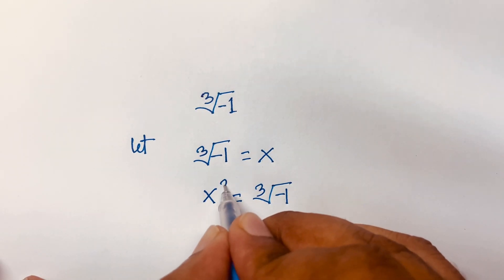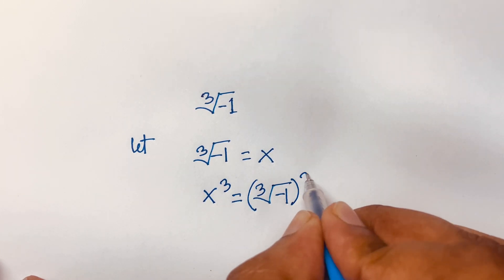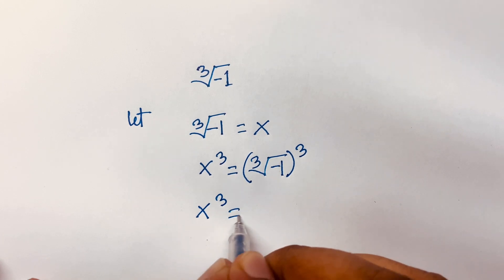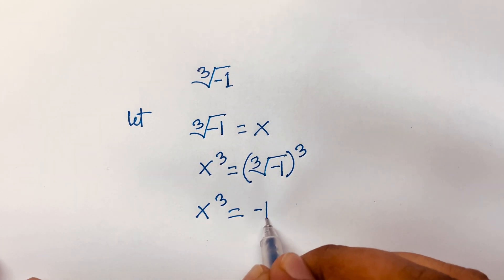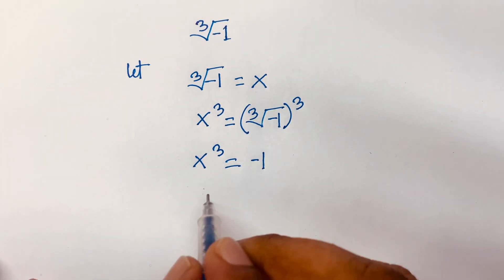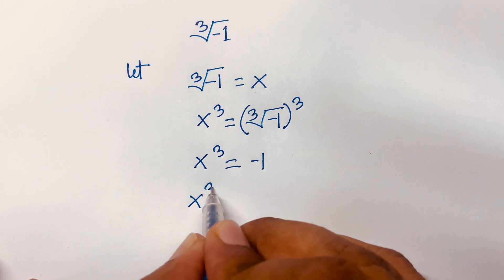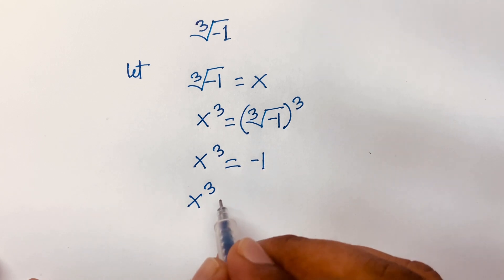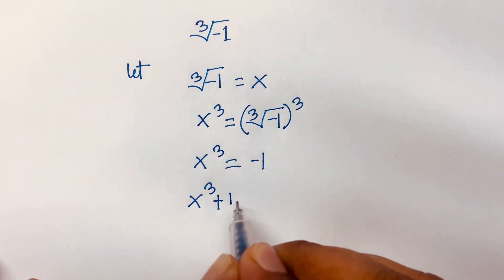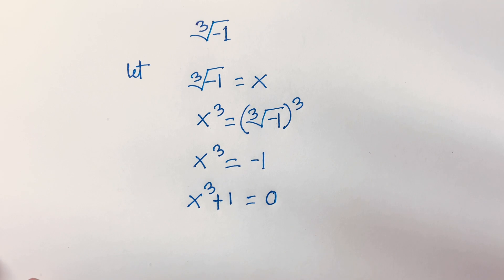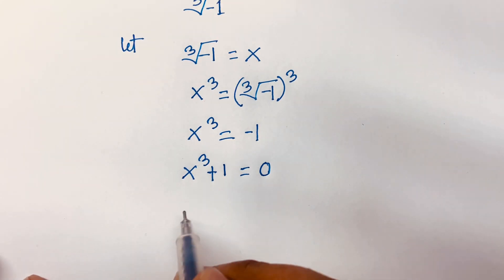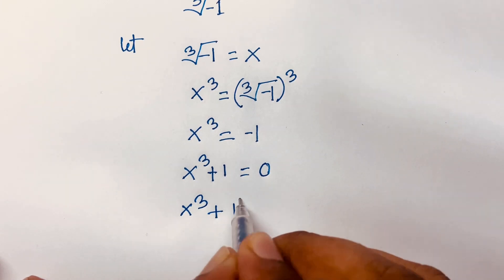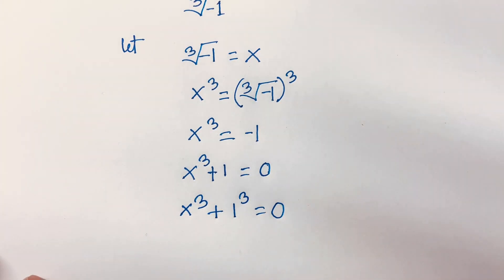Then I use both sides cubed. So x³ is equal to minus 1, since the cube and cube root cancel. Then moving minus 1 to the left side, we find x³ plus 1 is equal to 0.